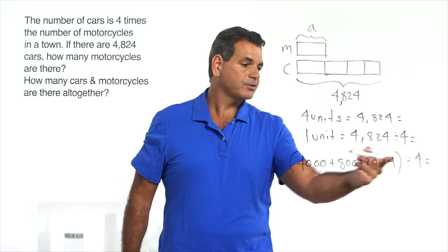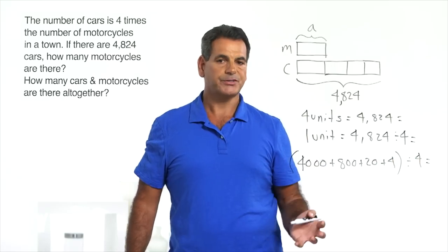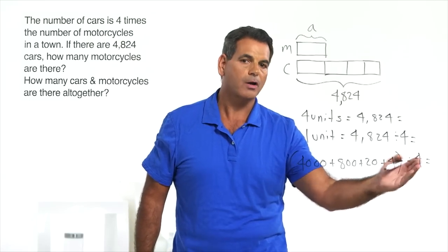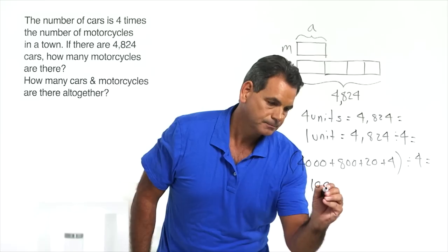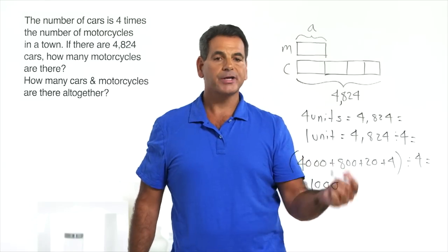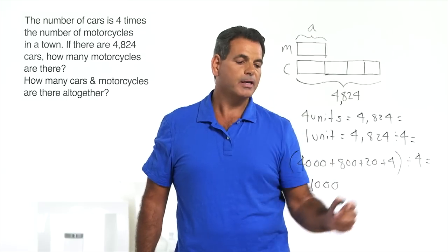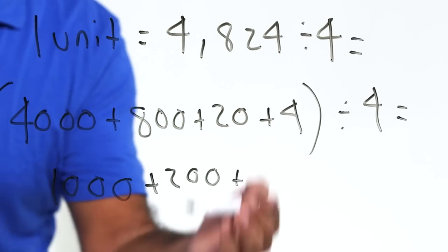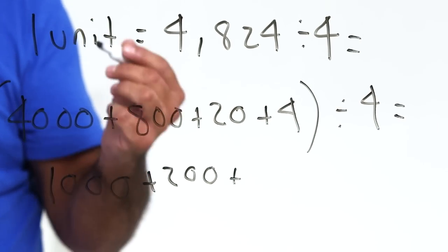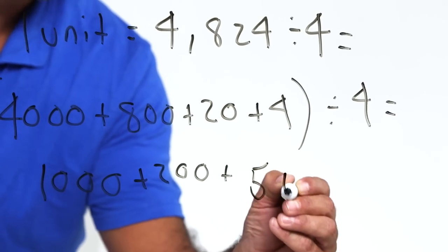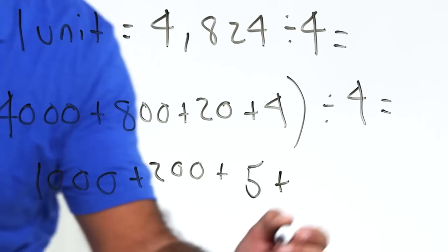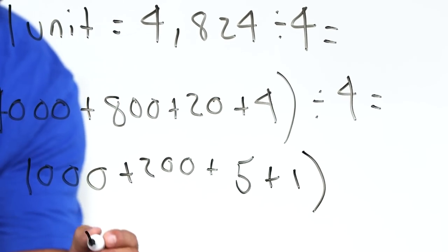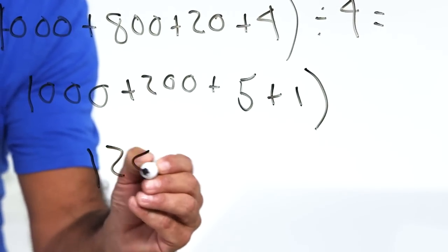4,000 divided by 4, single digit division. Four thousands divided by 4 equals 1,000. Eight hundreds divided by 4 equals two hundreds. 20 divided by 4 is a multiplication fact they know. Five. And 4 divided by 4, similarly, is 1. And they put the number back together as 1,206.